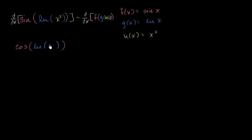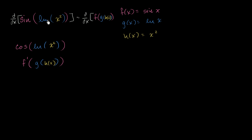So we get cosine of x squared. This part is f'(g(h(x))). I just took the derivative of the outer function with respect to whatever was inside it. Now I have to take the derivative of the inside with respect to x, but we have another composite function, so we're going to apply the chain rule again.